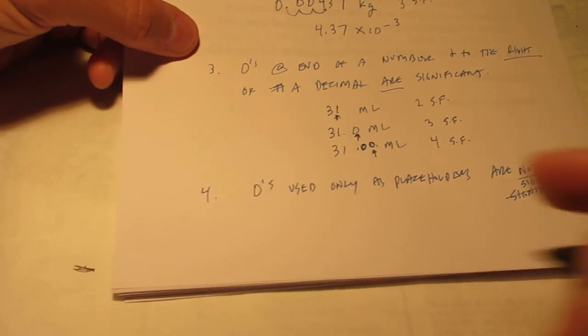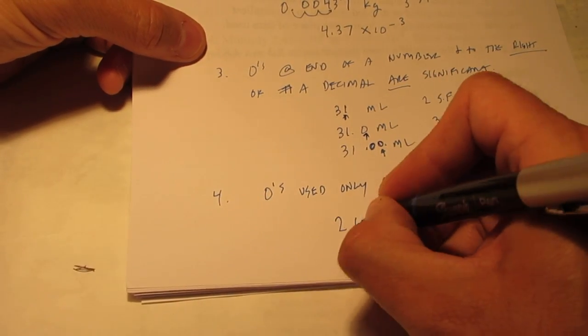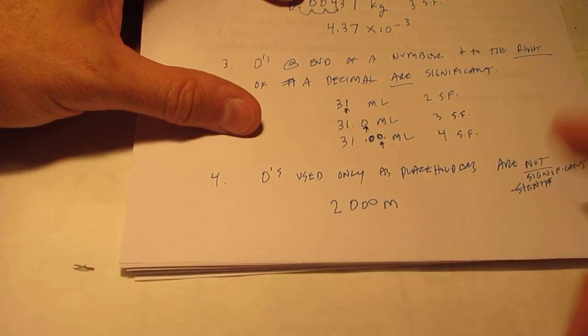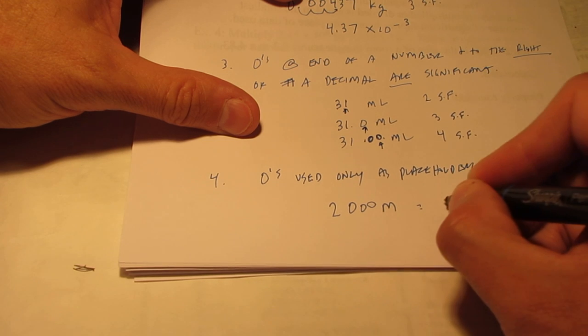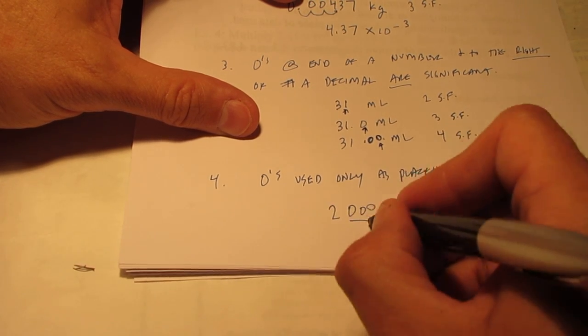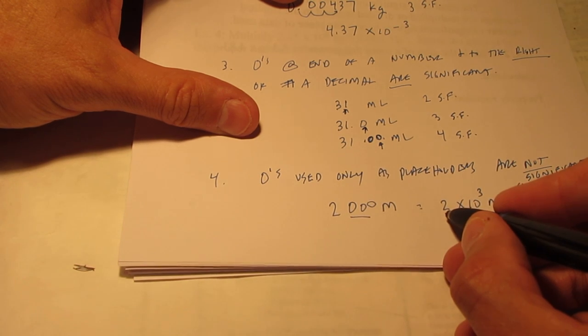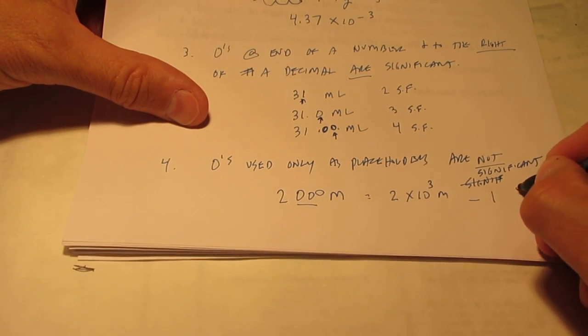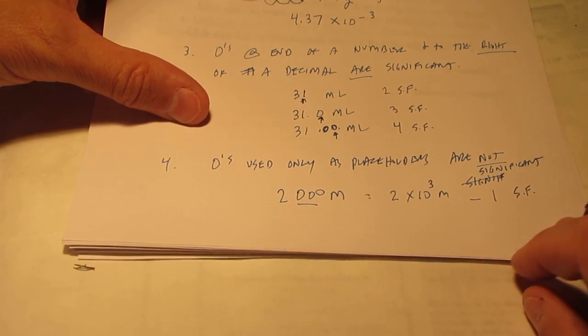Let me give you a couple of examples. If I wrote 2,000 meters. This is an example your book gives. I can write that as 2 times 10 to the third meters. You'll notice I didn't need to have those zeros when I wrote it in scientific form. So, I would say that that measurement had one significant figure.